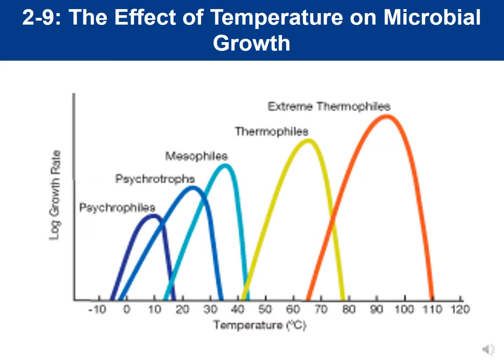Last time, we took five broths and inoculated one organism into all five broths — for example, E. coli. Those five broths were placed at a variety of temperatures: 5°C (the refrigerator), 25°C (room temperature), 38°C (close to human body temperature), 42°C, and 55°C. We're looking at which temperature the microbes grew best — the optimal temperature — as well as what the growth temperature range is.